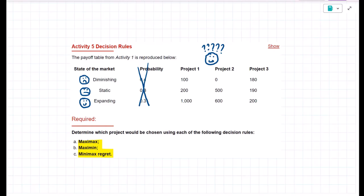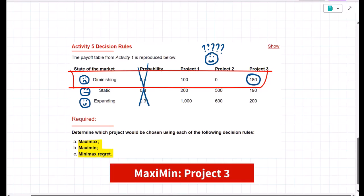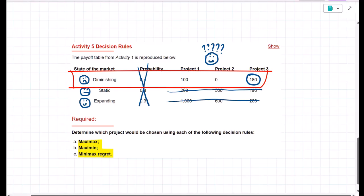Now, if we move to the maxi min decision rule, that's the decision rule for the risk-averse decision maker. They're going to assume the worst case scenario. And we see that's the diminishing market. So if we have a look at the diminishing market, we see the best option in the worst case scenario is project three. So no matter what, $180 profit will be earned. Again, the maxi min rule ignores the other situations, only looking at worst case scenario.